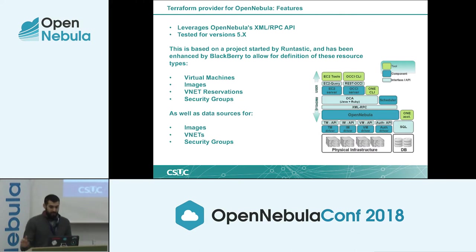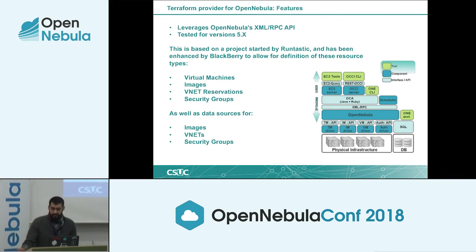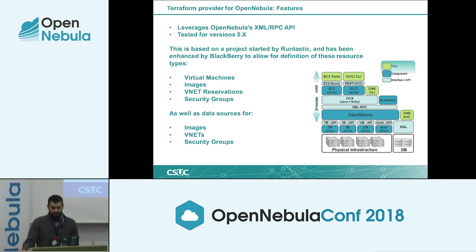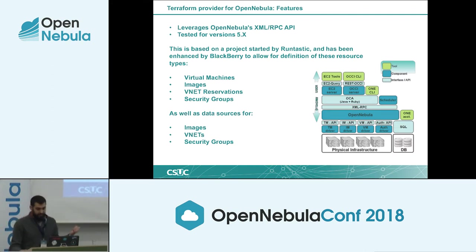Let's see what more Terraform can offer. This provider leverages the OpenNebula XML-RPC API and it's tested for version 5. As mentioned, it's based on a project started by Rentastic and continued by BlackBerry, and it currently allows us to define resources like templates, virtual machines, images, virtual networks, and security groups.